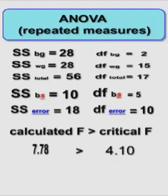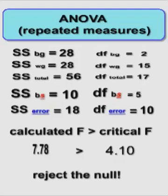So our calculated F is greater than the critical F from the back of the book, so therefore we get to reject the null. And that's all there is to it. Hope you enjoyed it.